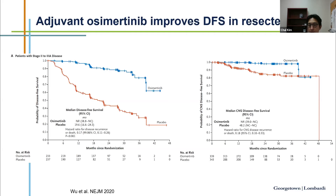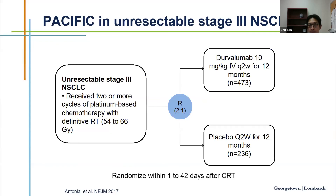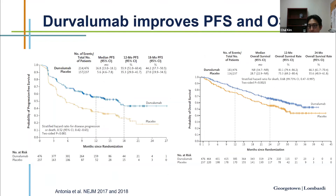Things are changing in adjuvant therapy. We now have the option of osimertinib — an EGFR TKI — for patients who had EGFR mutation and surgical resection. In this trial, three years of osimertinib versus placebo showed a pretty good disease-free survival benefit; overall survival data is still immature. For stage three unresectable non-small cell lung cancer, patients usually receive chemoradiation therapy, and the PACIFIC trial randomized patients to durvalumab — a PD-L1 inhibitor — versus placebo after chemoradiation, showing an overall survival benefit with durvalumab. This is now standard practice — to use durvalumab after chemoradiation therapy.